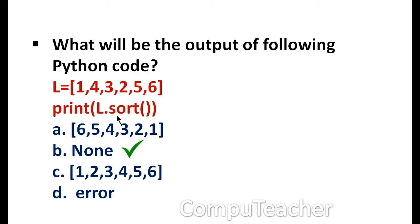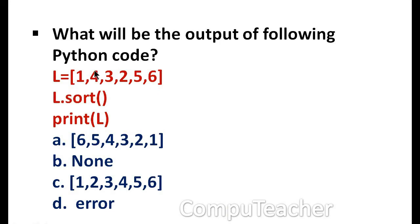If the question is written as L.sort() as a separate statement and then print L, the result will be [1, 2, 3, 4, 5, 6]. The sort function sorts the list in ascending order by default and changes the list in place. So when you then print L, the sorted list is displayed.